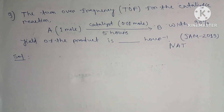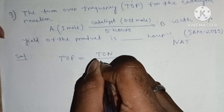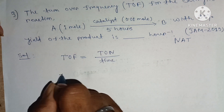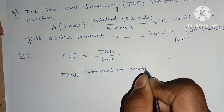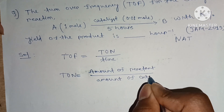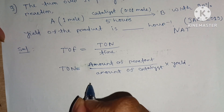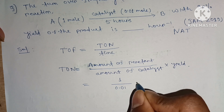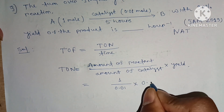To calculate turnover frequency, we first need turnover number. Turnover number equals amount of reactant divided by amount of catalyst, multiplied by yield. The amount of reactant is 1 mole, the amount of catalyst is 0.01 mole, and the yield is 90%, which in decimal is 0.9. So turnover number equals 1 divided by (0.01 × 0.9), which gives 90.